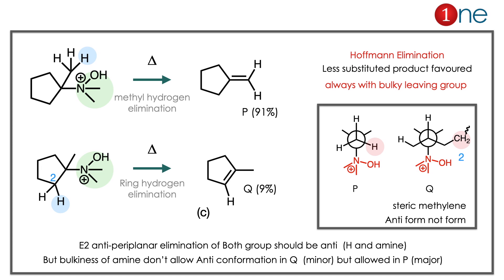For product P, the methyl hydrogen has no steric effect, so the anti-periplanar position is fine. But for product Q, the methylene group has repulsion from the quaternary ammonium salt, so the anti-periplanar position is not possible — the steric effect doesn't allow the anti-form. So that elimination is least favored. P is the major product; Q is the minor one. The answer is C. Two key learnings: Hofmann elimination is always favored with a bulky leaving group, and E2 mechanism always favors the anti-periplanar elimination.